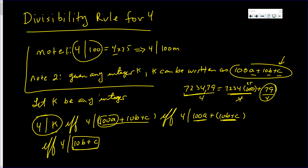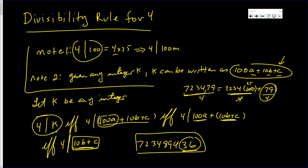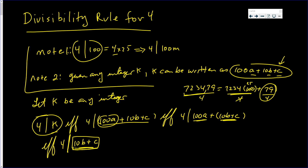That is the proof for the divisibility rule for four — just decide whether or not four goes into the last two digits. So if I give you a long, crazy number like this, ignore everything but the last two digits. Since four goes into thirty six, four will go into this whole number. If the last two digits had been thirty eight, since four does not go into thirty eight, four will not go into the big number. If you like to see videos like this where all we do is prove things, please subscribe to my channel. As always, continue to watch and learn, and continue to enjoy the stars.